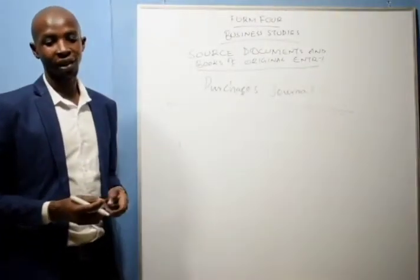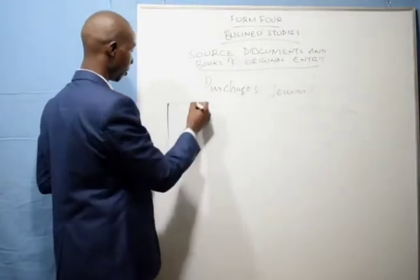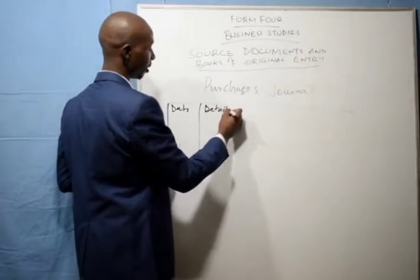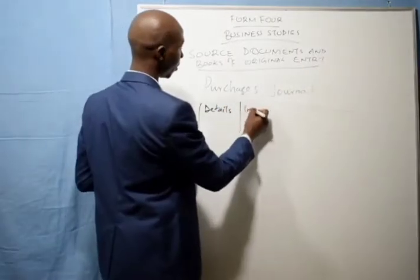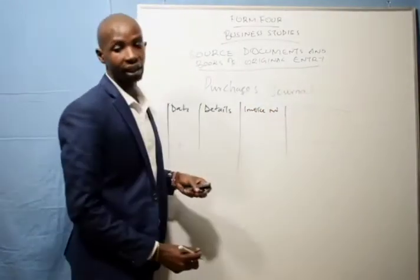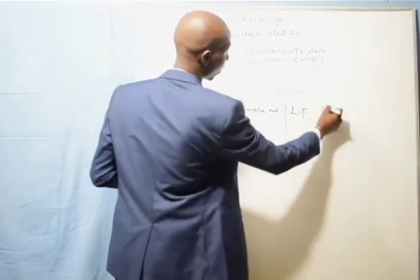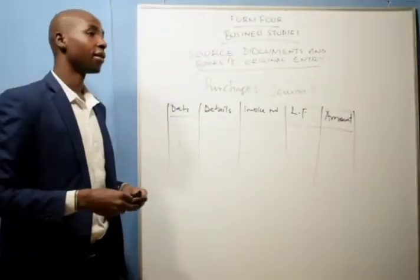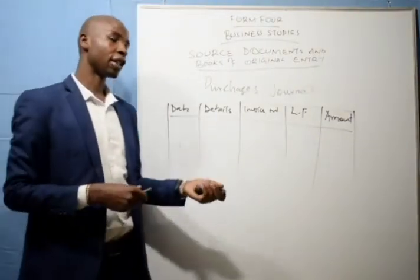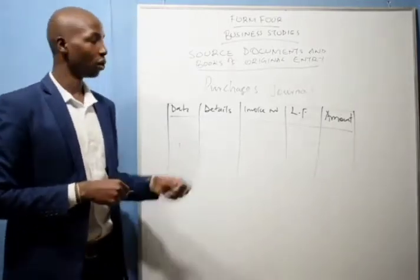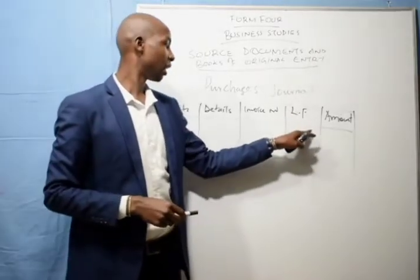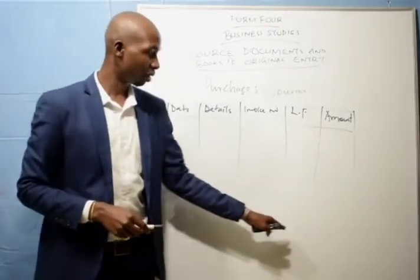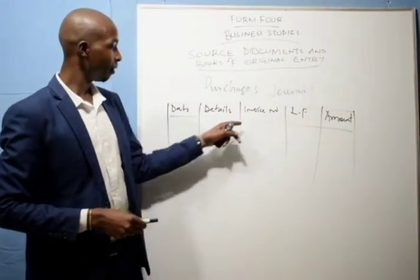The purchases journal has got a five-column format: date, details or particulars, invoice number, ledger folio, and amount. For example, if you are purchasing goods from trader A, trader B, and trader C, you will record each one. On the ledger folio you will have the general folio, and the total sum of the purchases will be recorded on a general ledger. Each and every transaction is going to be recorded in a respective ledger account.